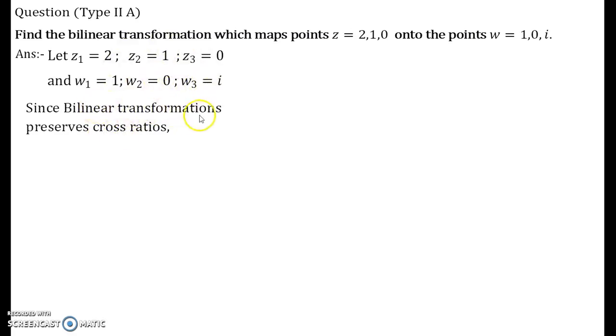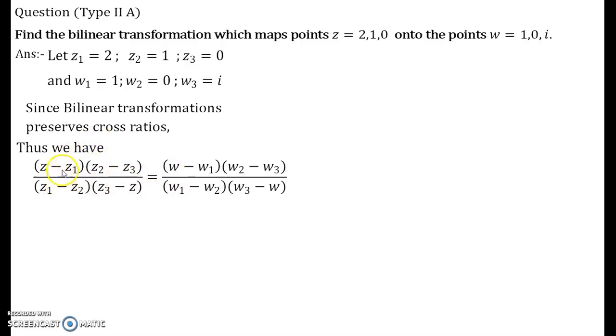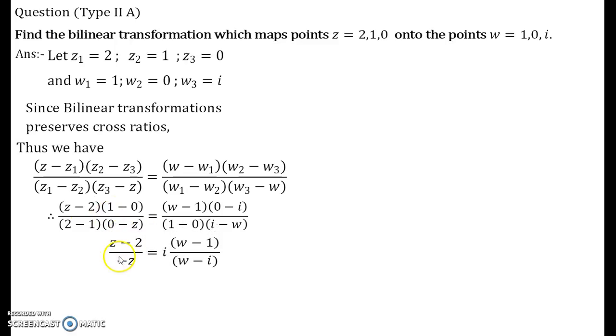So now how do we go about it? Since we know that the bilinear transformations preserve the cross ratio, what we will be doing is that we will use that third useful result that I had mentioned in my previous slide. So as per that result we get this. Now we have written z1, z2, z3 and w1, w2, w3. See, we plug up these values into this formula and then we get this. On solving each of the brackets, what do I get is (z - 2)/(-z) = i(w - 1)/(w - i), and further this is the expression that I will get.